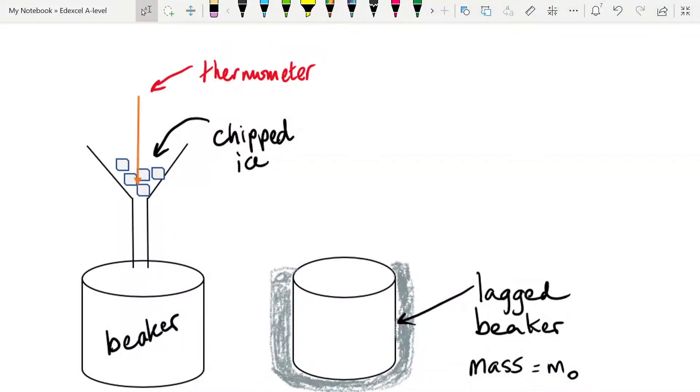Core Practical 13 is another one of these slightly odd ones, in that there isn't an investigation as such. You're not changing something and measuring and plotting a graph, you're just making measurements to try and determine the specific heat of a phase change, and the phase change here is you're trying to get the specific latent heat of fusion of ice.